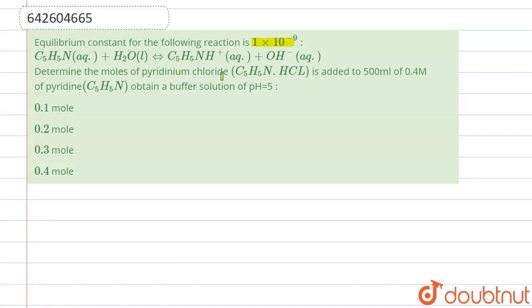that is added to 500 mL of pyridine to obtain a buffer solution of pH equals to 5.